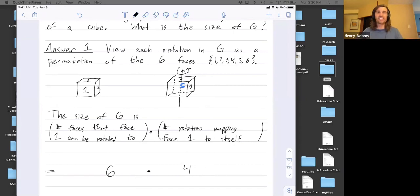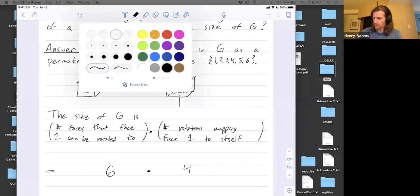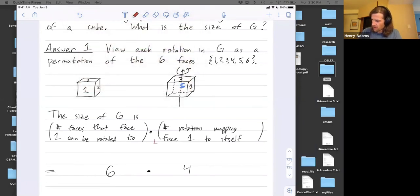So let me say a little bit more. This is going to be the size of a subgroup of G called the stabilizer. Stabilizer is not a bad name for this subgroup of rotations that's fixing the first face. It's stabilizing the first face.